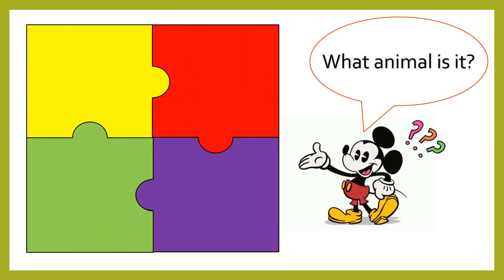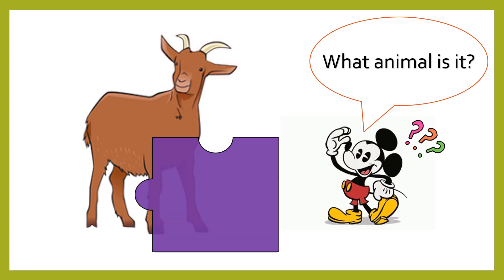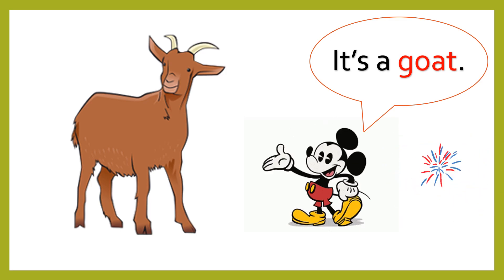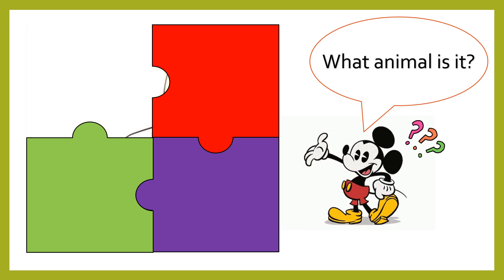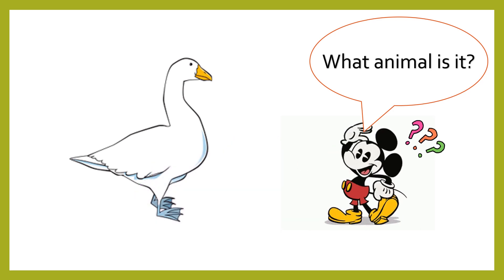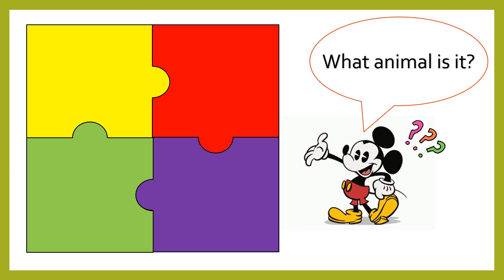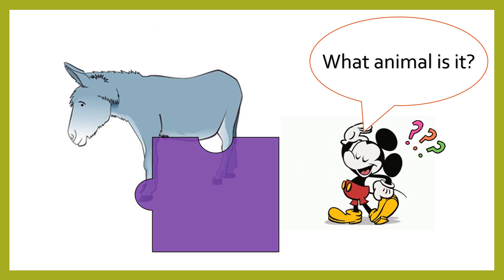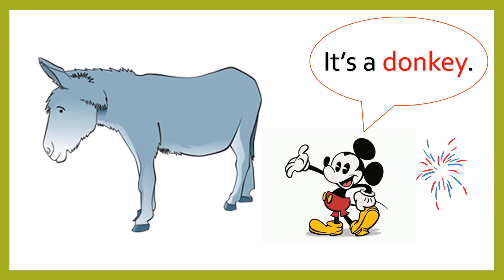Now, what animal is it? It's a goat. Now you guess, what animal is it? It's a goose. Well done. Now, the last one. What animal is it? It's a donkey. Yes, very good.